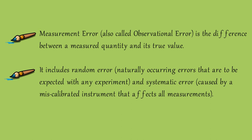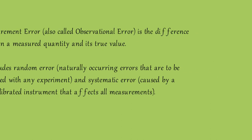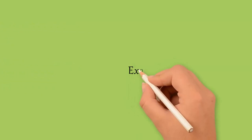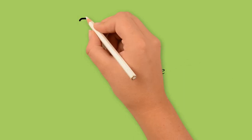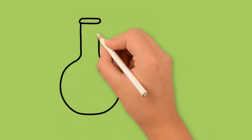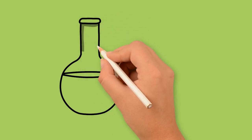Random error means naturally occurring errors that are to be expected with any experiment. Systematic errors means errors caused by a miscalibrated instrument that affects all measurements. Obviously, agar aapka jo instrument aap use kar rahi ho woh miscalibrated hai, properly calibrated nahi hai, us mein kisi qisam ka error hai, to us ki wajah se aap jo problem face karogi, that is basically known as measurement error.